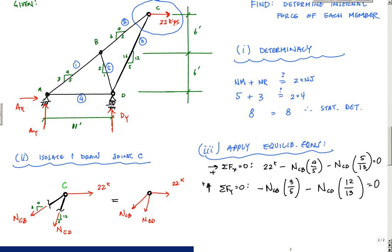So we're back and we're going to finish out this example problem using method of joints for this truss. Last time when we left off we had two equations, two unknowns for joint C which we had isolated from the beginning.